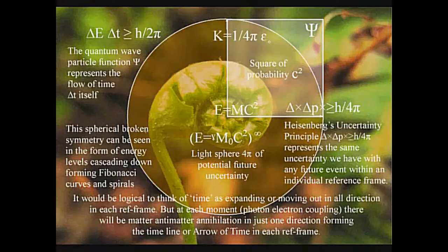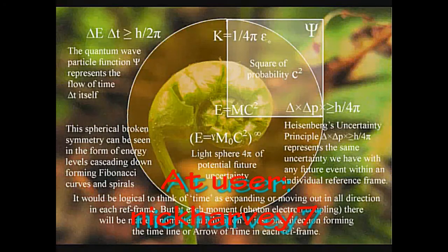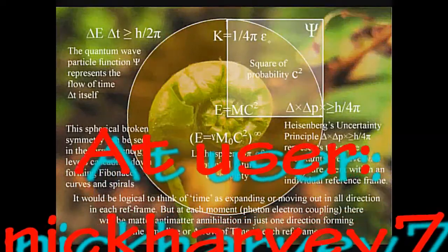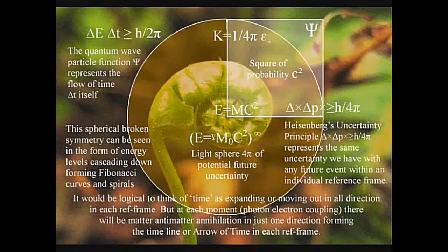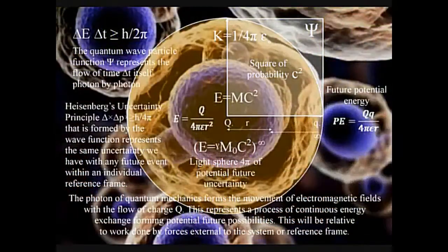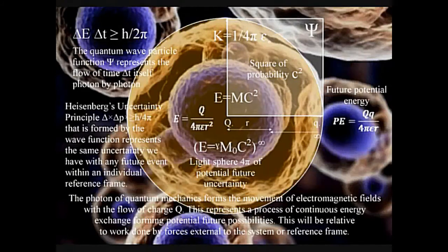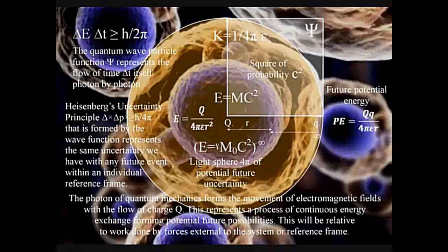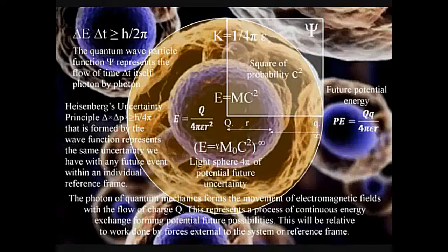The fine-tuned universe is the proposition that the conditions that allow life in the universe can only occur when certain universal fundamental physical constants lie within a very narrow range. So that if any of the fundamental constants were only slightly different, it would have been impossible for life to have evolved within the universe.